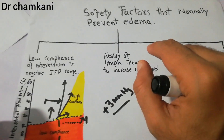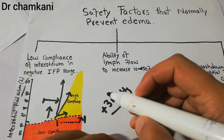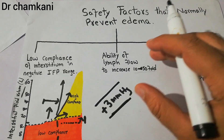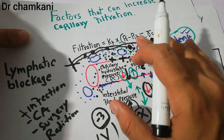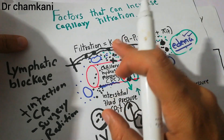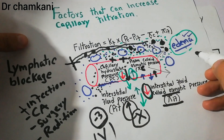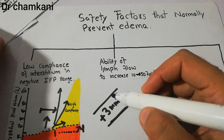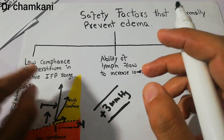To summarize, the low compliance of interstitium in the negative interstitial fluid pressure range has the capacity to prevent edema up to 3 mmHg. Suppose this is a capillary and all four forces are functional. If the capillary pressure after adjustment for any increase or decrease in forces is up to 3 mmHg above normal, it can be safely compensated by this first safety factor.